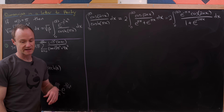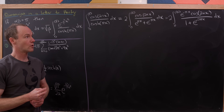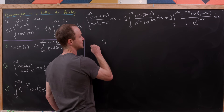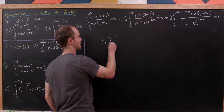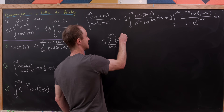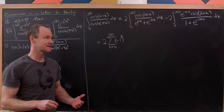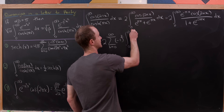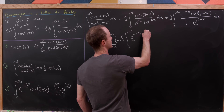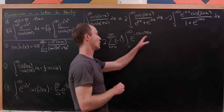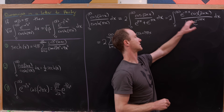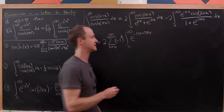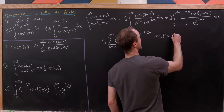Next, we expand one over one plus e^(-2pi x) as a geometric series with common ratio minus e^(-2pi x). That gives us two times the sum as k goes from zero to infinity of (-1)^k, times the integral from zero to infinity of e^(-(2k+1) pi x) — one factor from the e^(-pi x) and the rest from the geometric series — times cosine(2nx) dx.